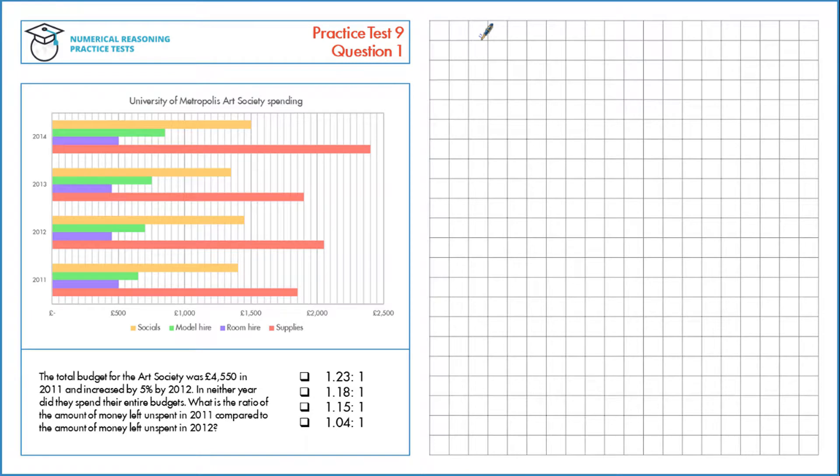The total budget for the Art Society was £4,550 in 2011 and increased by 5% in 2012. In neither year did they spend their entire budget. What is the ratio of the amount of money left unspent in 2011 compared to 2012?